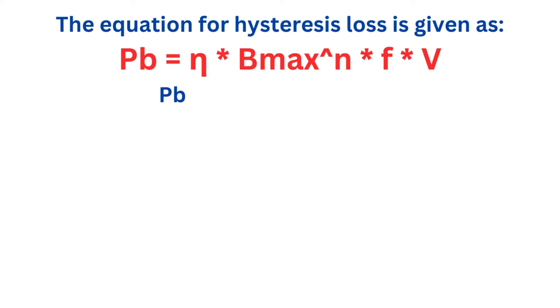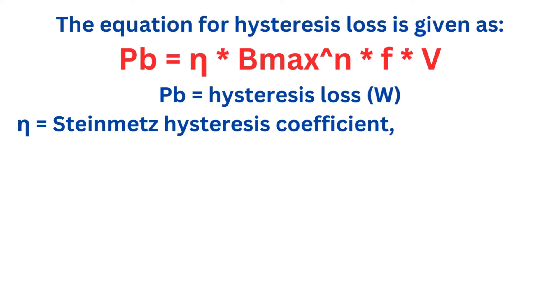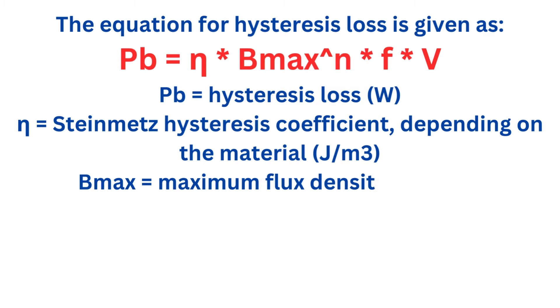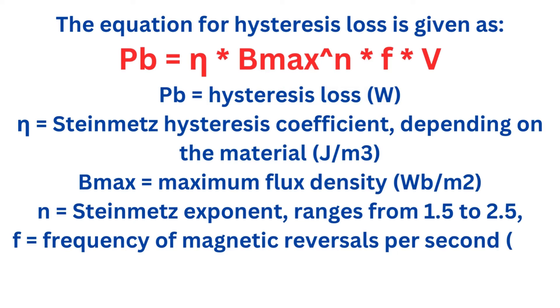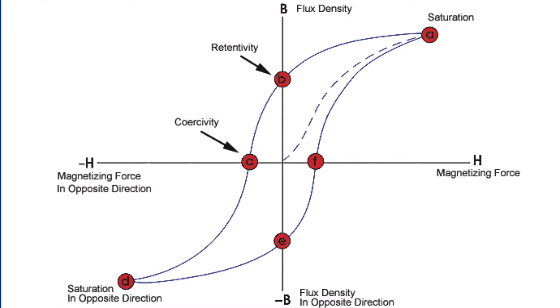Let's break down the formula for hysteresis loss. Pb equals ETA times Bmax to the power of N times F times V. Here, ETA represents the Steinmetz hysteresis coefficient, which varies based on the material. Bmax is the maximum flux density. N is the Steinmetz exponent, highlighting material dependency ranging from 1.5 to 2.5. The symbol F stands for the frequency of magnetic reversals per second, and V is the volume of the magnetic material. This loop of energy loss is critical in understanding the efficiency of electrical machines.